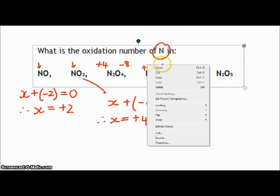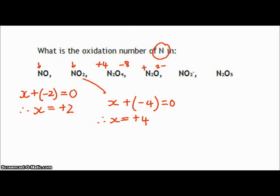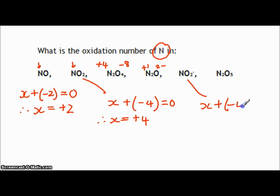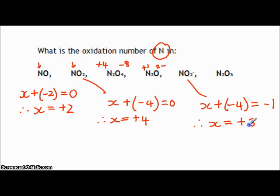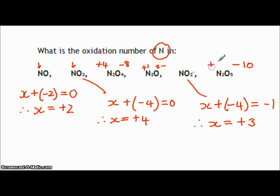Let's take NO₂⁻ more carefully. Nitrogen is x, two oxygens contribute minus four, and notice this is an ion — NO₂⁻ — so it must equal minus one. Solving for x gives plus three. The last one: five oxygens each at minus two gives minus ten, so two nitrogens must be plus ten, meaning each nitrogen is plus five.